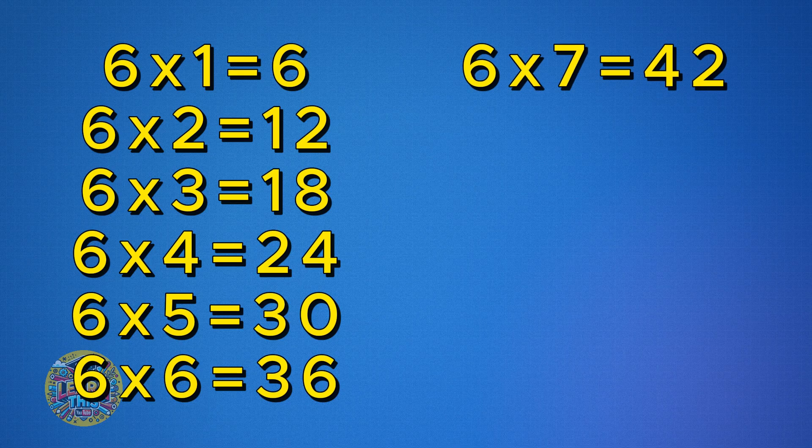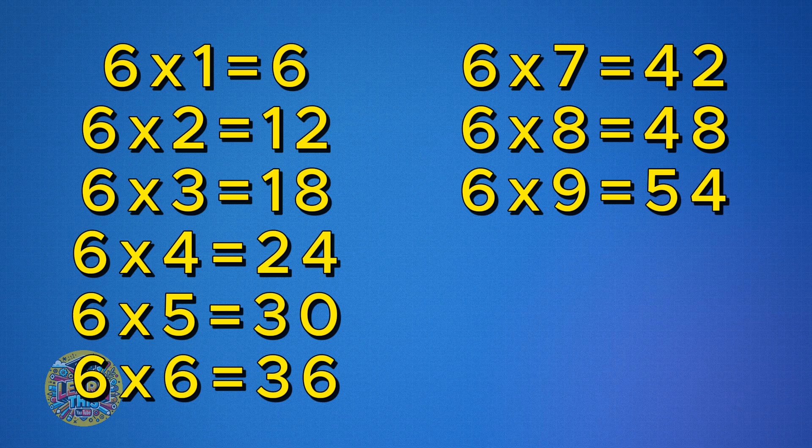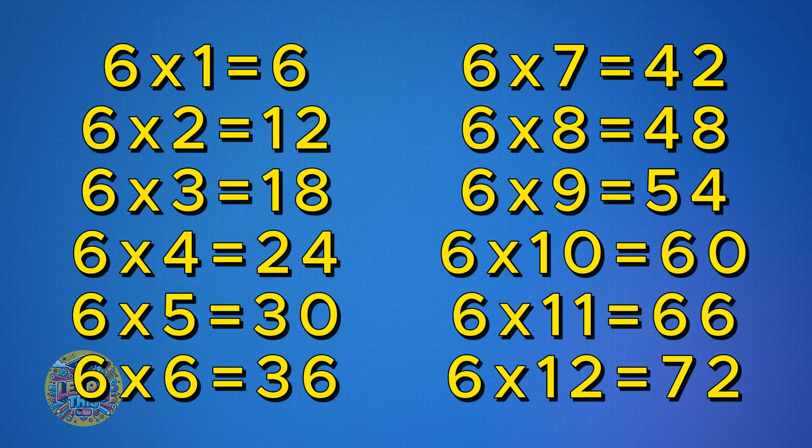Six times seven is forty-two. Six times eight is forty-eight. Six times nine is fifty-four. Six times ten is sixty. Six times eleven is sixty-six. Six times twelve is seventy-two. Nice work.